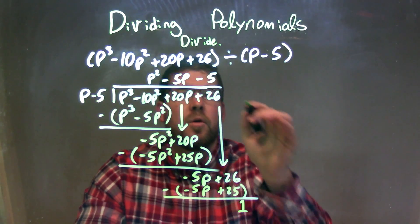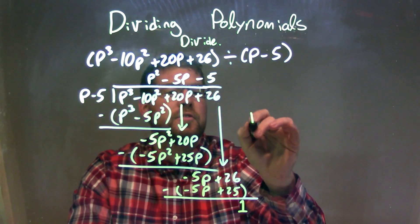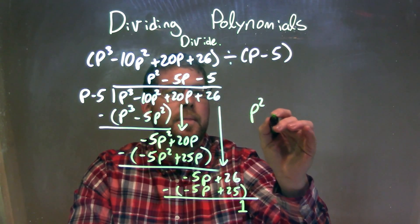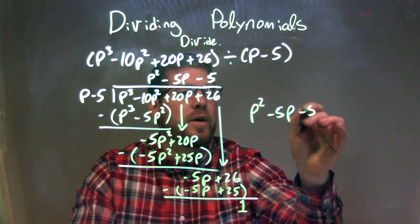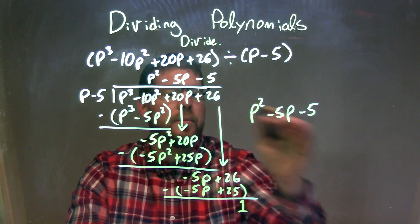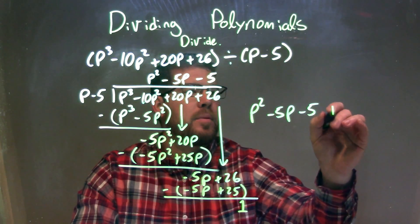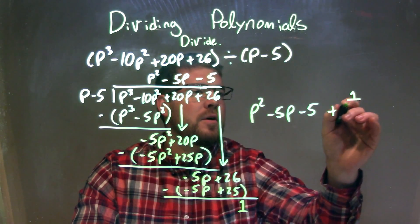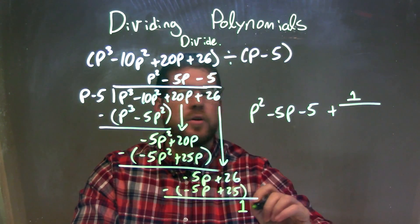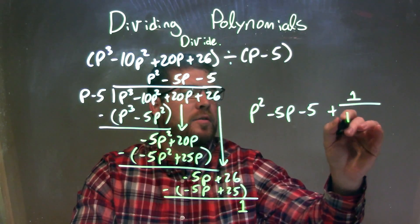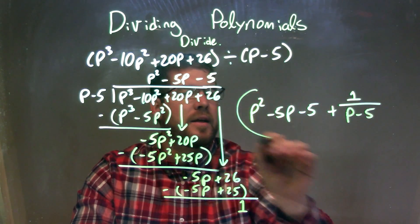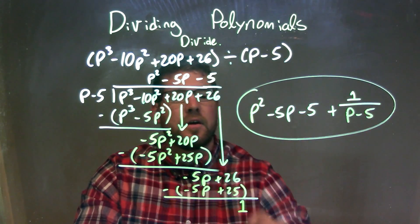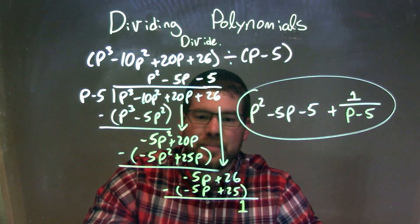And so our final answer is p squared minus 5p minus 5, which is written right up there, plus 1 — my remainder over my divisor, which is p minus 5. That is our final answer.